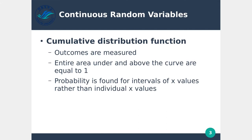With the cumulative distribution function, the outcomes are measured, and the entire area under the curve is equal to 1. Every point on the graph — if you add up all of the probability, it has to equal 1. That doesn't mean something will definitely happen; it could be a combination of something happening and something not happening. Probability is found for intervals of x values rather than individual x values. So instead of finding the probability that somebody picks the number 7, we find the probability that a number falls within a certain range.